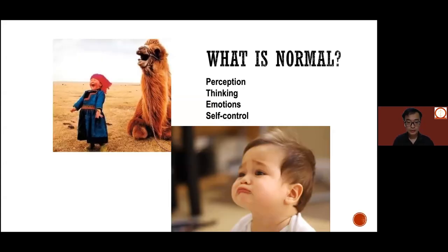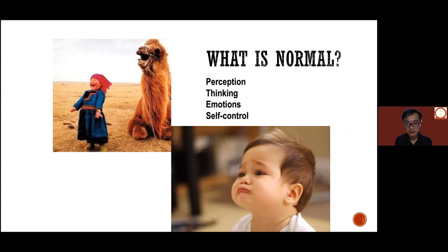First, I'd like to walk us through what is normal. When we say we have a normal mental state, we are thinking about a few domains: perception — how we see the world; thinking — our thinking process; emotional control; and finally self-control in terms of managing our impulses. Day to day, most of us cope well, and these are what keep us going.